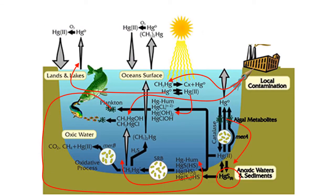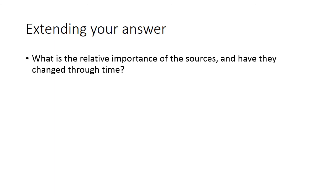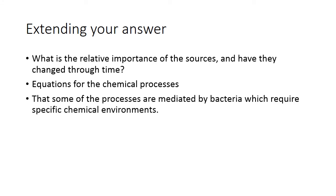Here's the kind of diagram from the lecture illustrating different processes and how different forms of mercury are converted from one to another by biochemical processes — it wouldn't have been essential but it helps illustrate your answer. To take the answer further: for sources, you could note which were most important, how they've changed through time, and how anthropogenic sources have increased — specifically how the burning of coal has increased and is now the dominant source of mercury to the environment. You could also write down some of the equations for chemical processes. In a chemical oceanography course, if you can expand your answers with chemistry, that's always beneficial. Adding details about the relevant biology could also be quite useful.